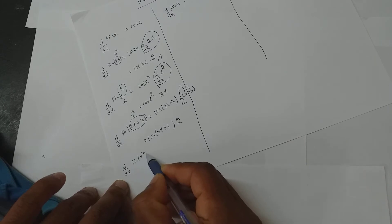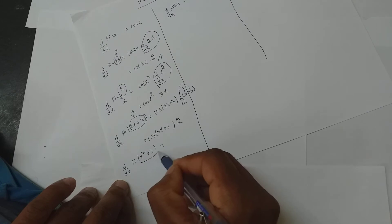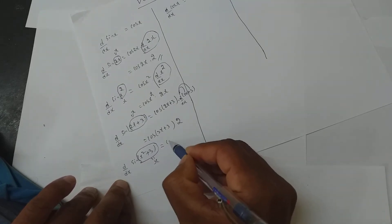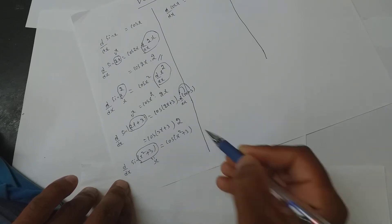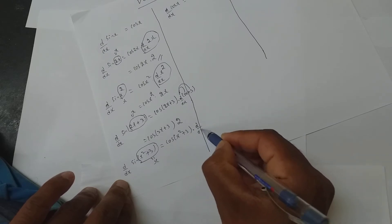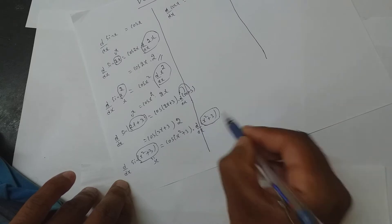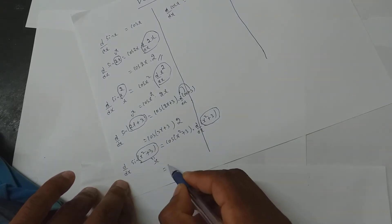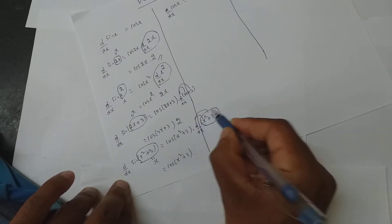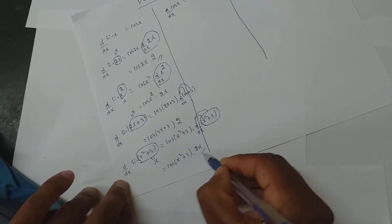One more example: if it is d/dx of sine of x square plus 3, again you will assume this entire thing to be x. The derivative of sin x is cos x, so it becomes cos of x square plus 3, and d/dx of your assumption. So it is cos of x square plus 3 into: when applied to x square I get 2x, for 3 I get 0 — no need to write that.